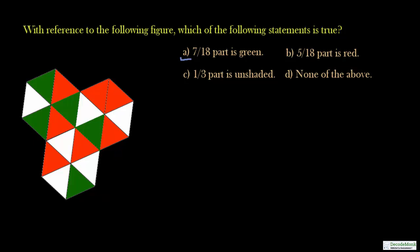The first option says 7 by 18 part is green. The trick in such questions I have already told you that you need to figure out the total number of basic units first. The basic unit is the triangle into which these hexagons are divided.